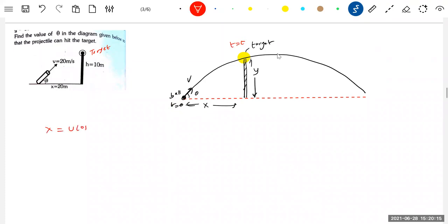x equal to u cos theta into t. I will make it as u. So y will be u sin theta t minus gt square by 2. Then bring that t here.